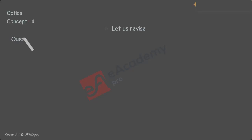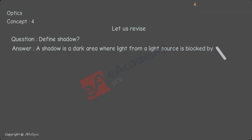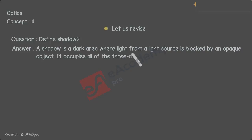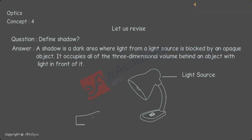Let us revise. Define shadow. A shadow is a dark area where light from a light source is blocked by an opaque object. It occupies all of the three-dimensional volume behind an object with light in front of it.